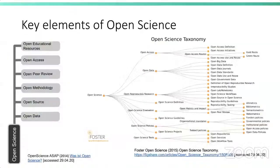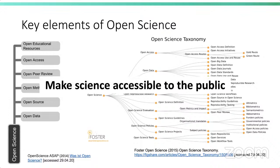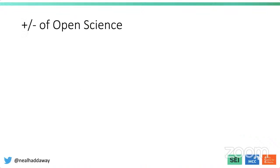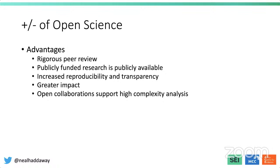To start off, let's talk about Open Science, which is obviously very important to the topic. There have been a number of different taxonomies and definitions set out to explain the key elements of Open Science, but in principle they all relate to making science as accessible to the public as possible. Some advantages include more rigorous peer review, publicly funded research being publicly available, increased reproducibility and transparency, greater impact, and open collaborations supporting high-complexity analyses.